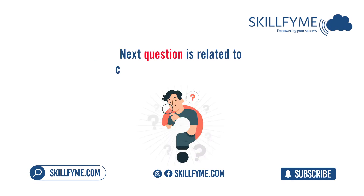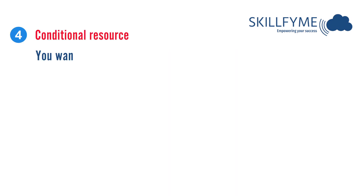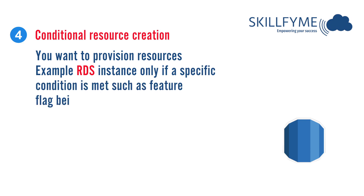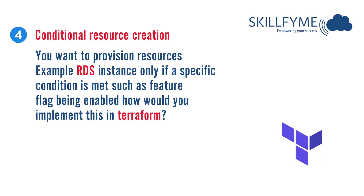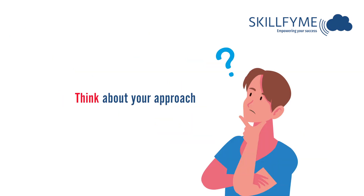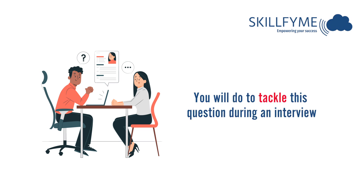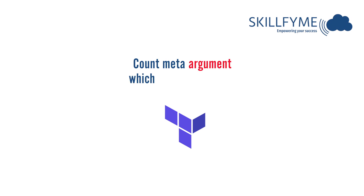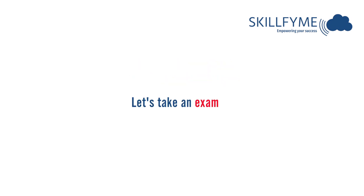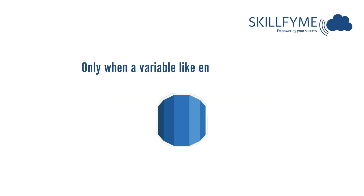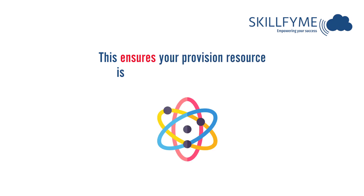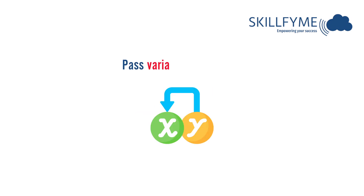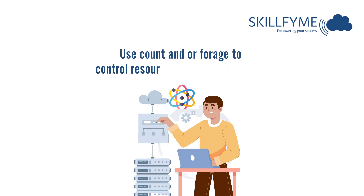The next question is related to conditional resource creation: you want to provision resources like an RDS instance only if a specific condition is met, such as a feature flag being enabled — how would you implement this in Terraform? The answer is to use Terraform's count meta-argument. For example, create a resource to be provisioned only when a variable like enable_rds is true. You can also use conditional expressions in modules, passing variables and using count or for_each to control resource creation dynamically.